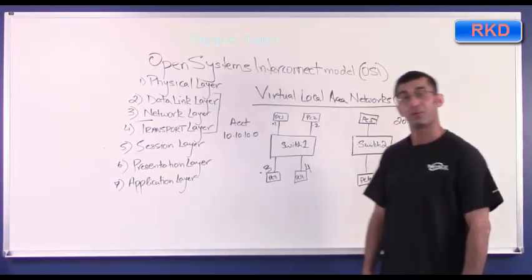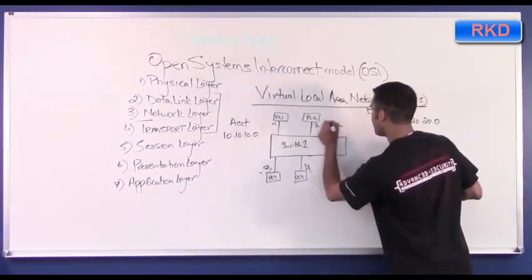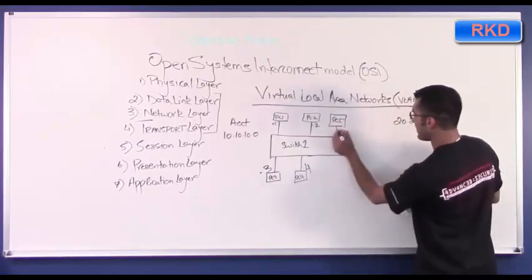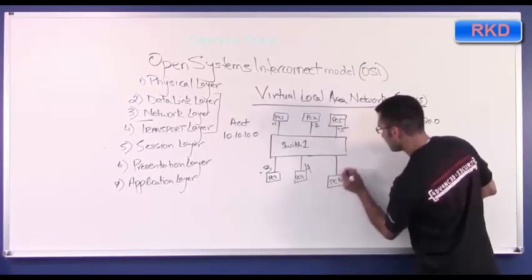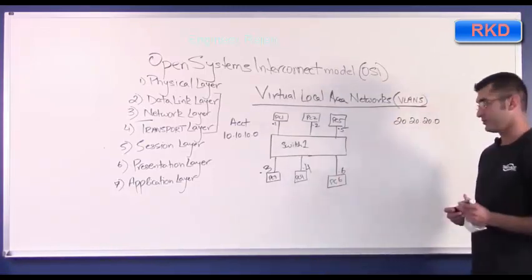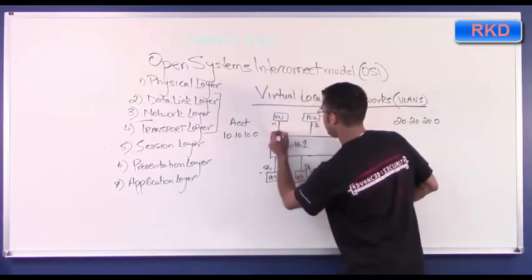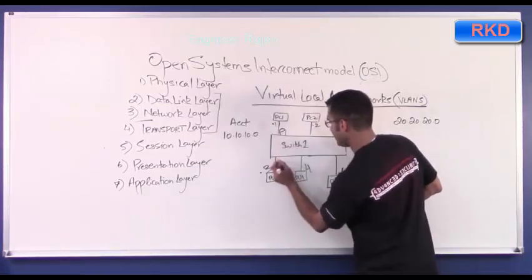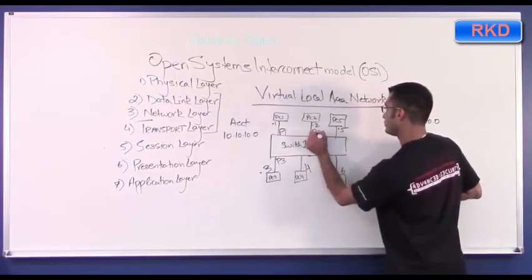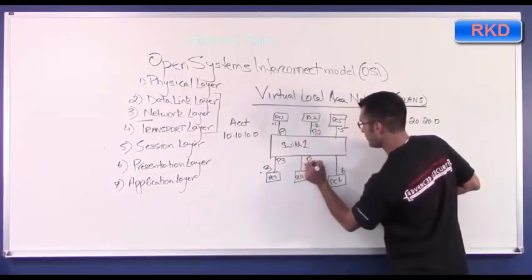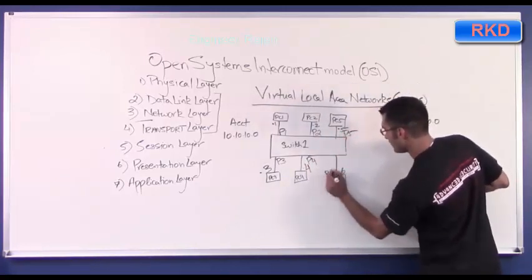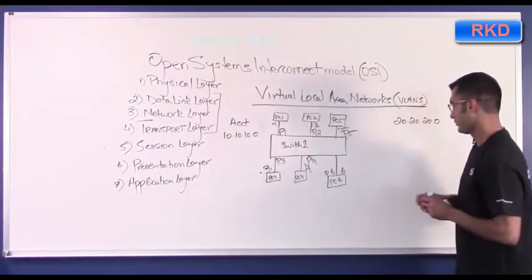The separation comes by having a physical separation—just buying different devices. But then you run into the problem where you're wasting ports. What if I do put PC5 (which is 20.20.20.5) and PC6 (which is 20.20.20.6) on the same switch? Let's pretend PC1 is connected to port 1, PC2 to port 2, PC3 to port 3, PC4 to port 4, PC5 to port 5, and PC6 to port 6.